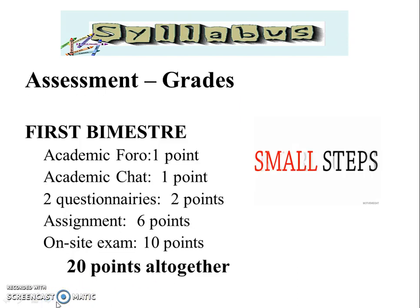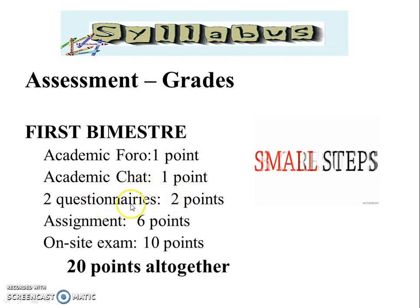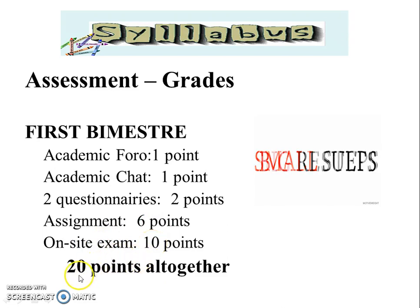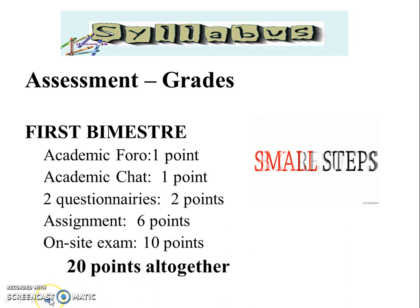Here is the evaluation system: academic forum — 1 point, academic chat — 1 point, two questionnaires — 2 points (1 point each), assignment — 6 points, and on-site exam — 10 points. These add together to 20 points each semester, which means 40 points total for the two semesters combined. That is the top grade needed to pass the subject.